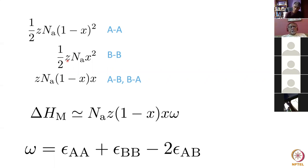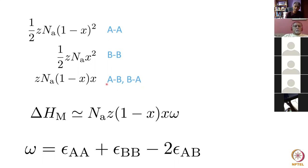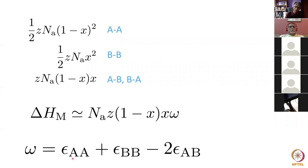To find AB bonds we take the probability of finding an A atom multiplied by the probability of finding a B atom, and also a BA bond which can be distinguished from an AB bond, so there's no factor of half. All we have to do now is see how many AA bonds and BB bonds we had to break in order to create AB bonds, and that gives us our enthalpy of mixing: N_A × Z × (1-x) × x × ω, where omega is the difference in binding energies — the change in energy when you break an AA bond and a BB bond to create two AB bonds.